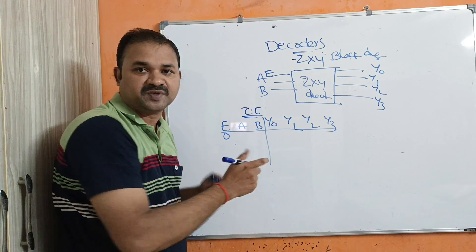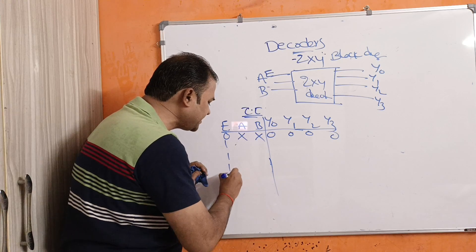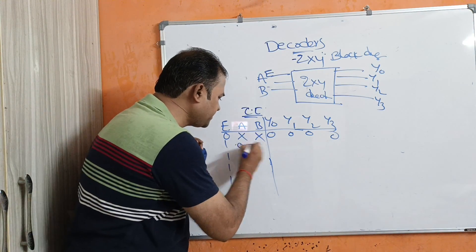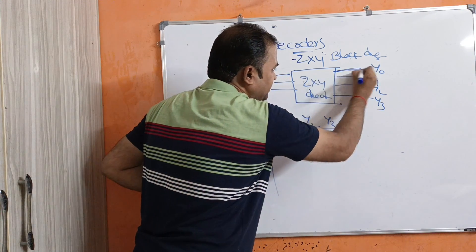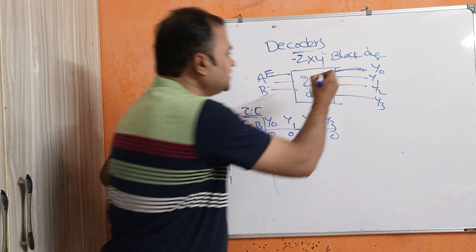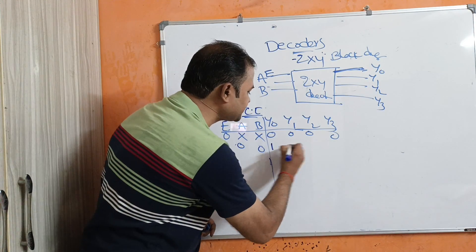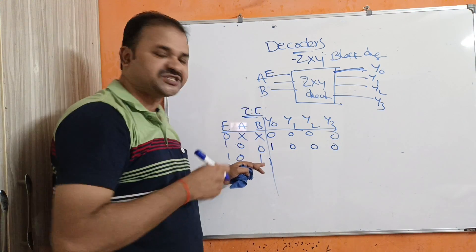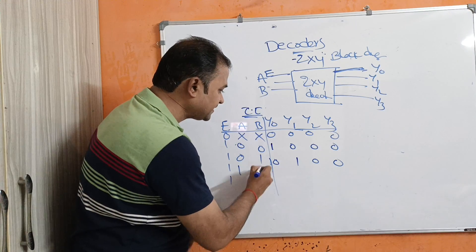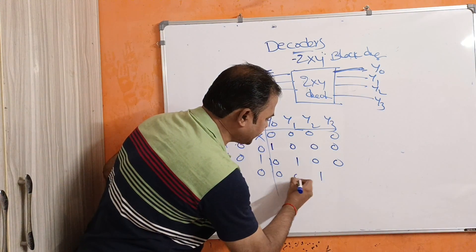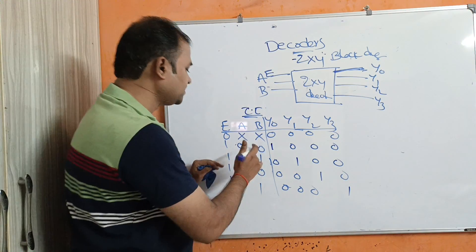If the enable input is 0, then irrespective of A and B — whether 0 or 1 — it does not produce any output. When enable is 1, the decoder produces output. If inputs are 0,0 then Y0 is active (Y0=1, rest are 0). If inputs are 0,1 then Y1 is active. If inputs are 1,0 then Y2 is active. If inputs are 1,1 then Y3 is active.